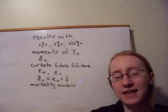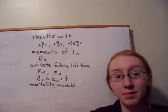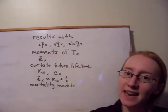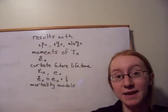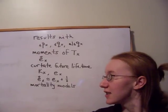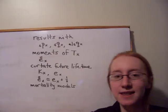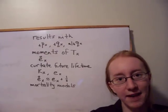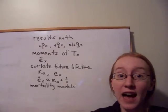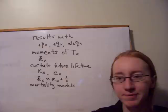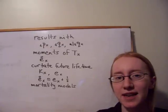Finally, we looked at the relationship between the complete expectation of life and the curtate expectation of life. A very good approximation is that E circle X equals EX plus one half. So on average, someone's going to die halfway through a year. That's a reasonable assumption to make, especially at younger ages.